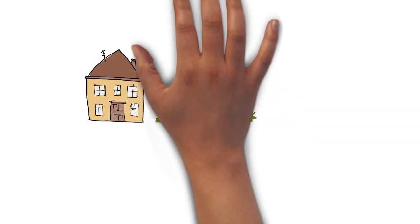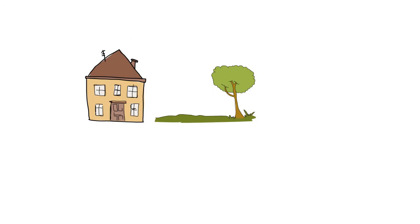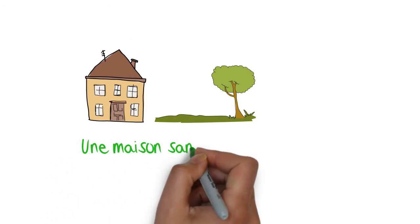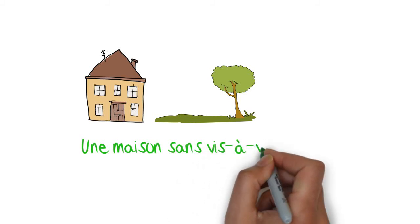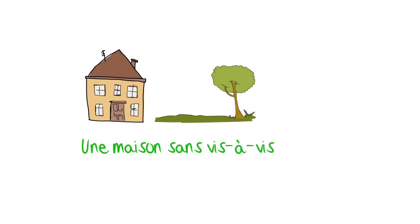It's an expression we use when someone wants to rent or buy a new house. We want to know what we have in the neighborhood. If you want an open outlook, you will say je veux une maison sans vis-à-vis.